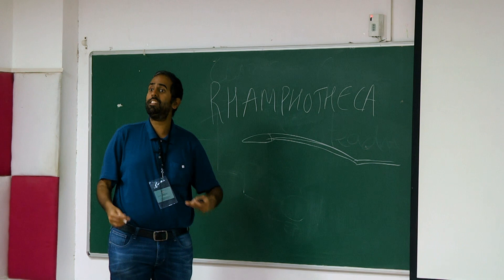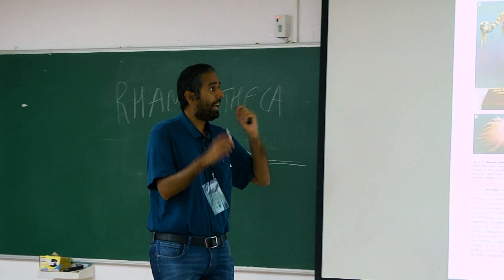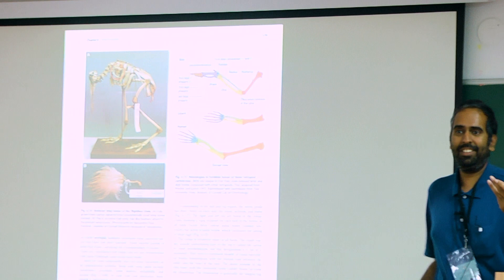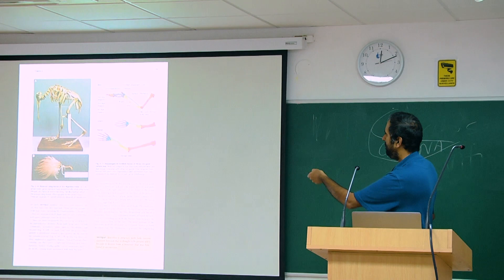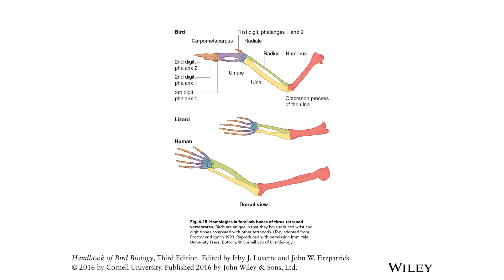By looking at the ratios of the length of these bones, you can tell what kind of flight a bird might have. You can look backwards and see where they originated from by looking at mammalian limbs — see our carpals and metacarpals and how they've all fused in the bird, and how all our separate phalanges have fused into a little nub in birds.